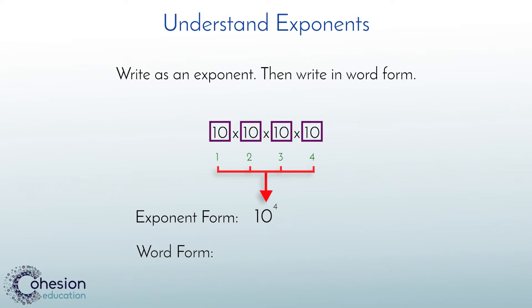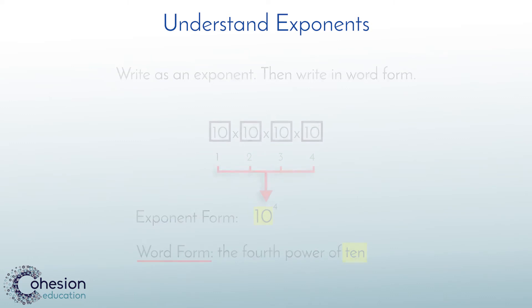Now that we have written the exponent, to say it correctly or put it into word form, we would need to say the number of times the base is multiplied as the power. The exponent would read: the fourth power of 10.